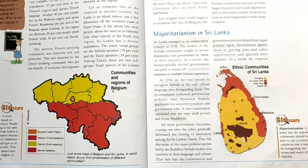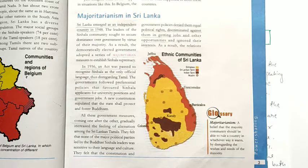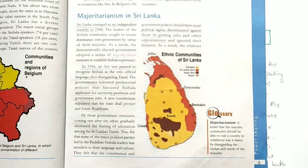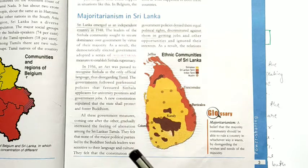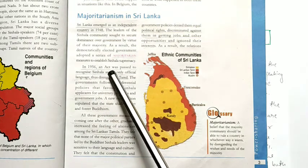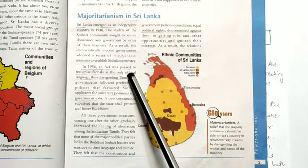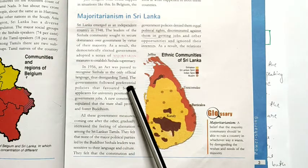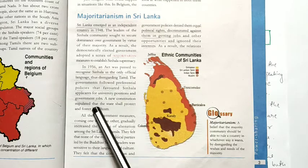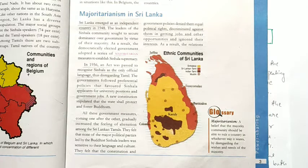Now let us look at what happened in both countries. First, let's see the outcome of majoritarianism in Sri Lanka. Majoritarianism means the majority community rules according to their will, disregarding the will of the minority. Sri Lanka got independence in 1948, after which the leaders of the Sinhala community, being in majority, formed the government. In 1956, an act was passed to recognize Sinhala as the only official language, disregarding Tamil. They also followed preferential policies that favored Sinhala applicants for university positions and government jobs, and gave importance only to Buddhism.